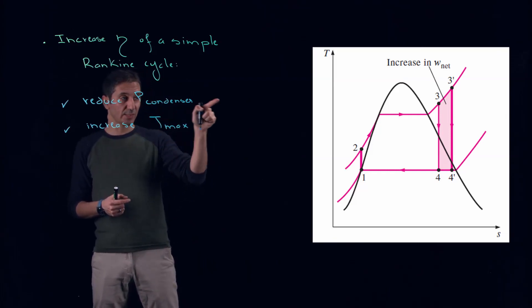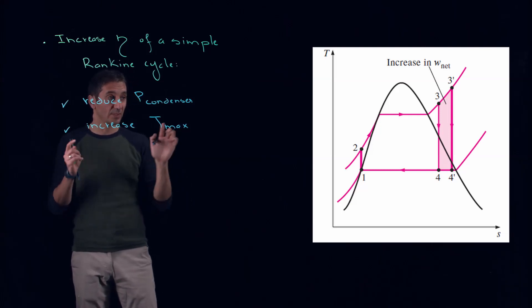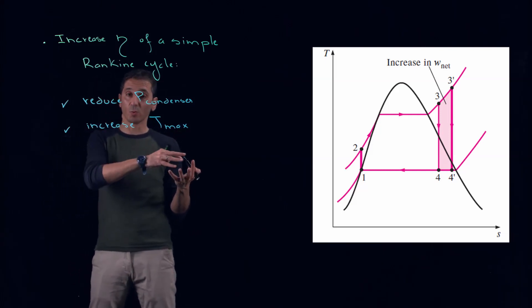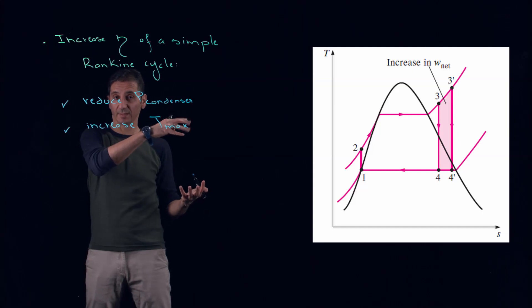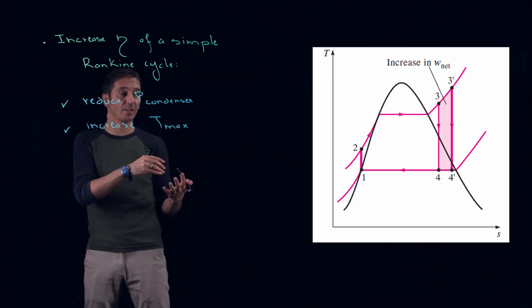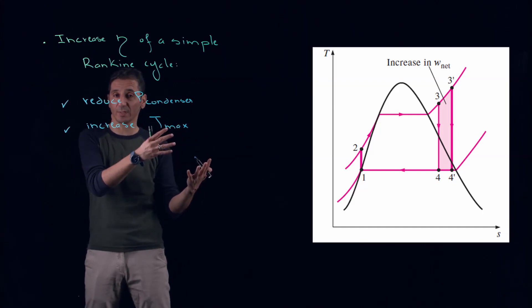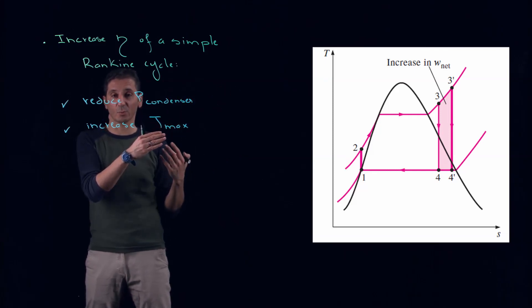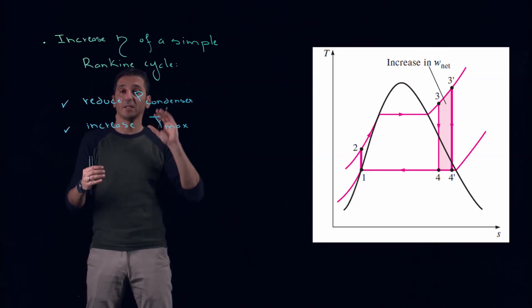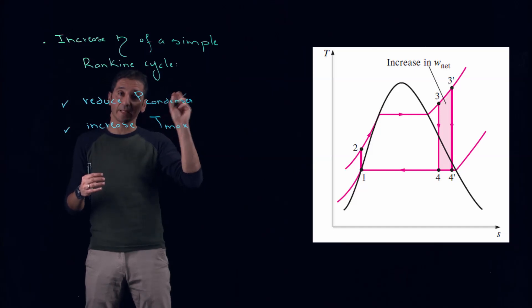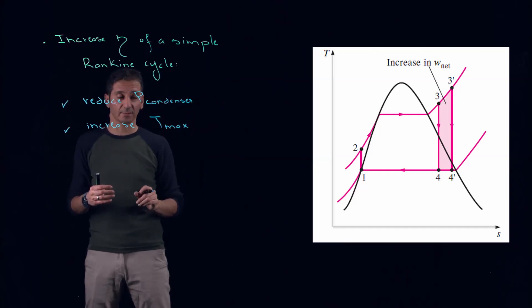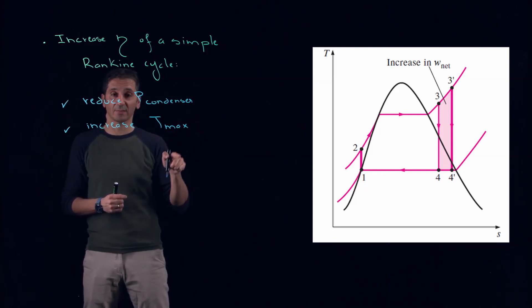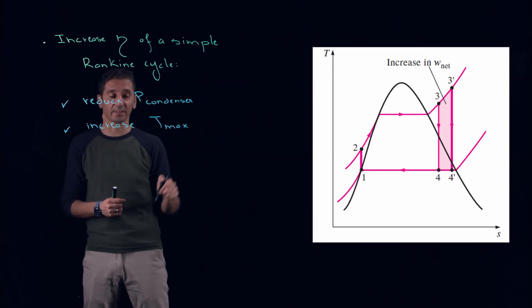But if you see it on our cycle, this is cool because the work, the area will increase. However, there is a price to pay here: Qin will also increase, which is the area between state 2 and state 3. So we are increasing both Qin and the work net. But the good news is that the quality now will increase, which is something we like.